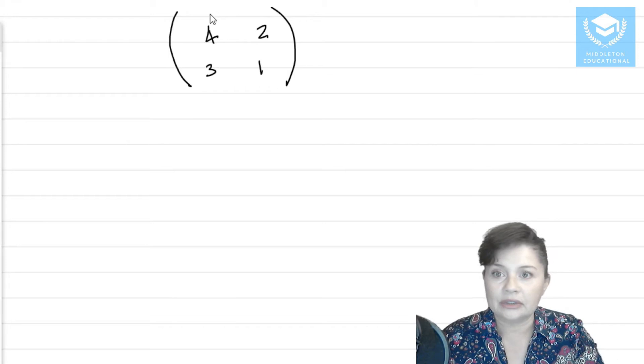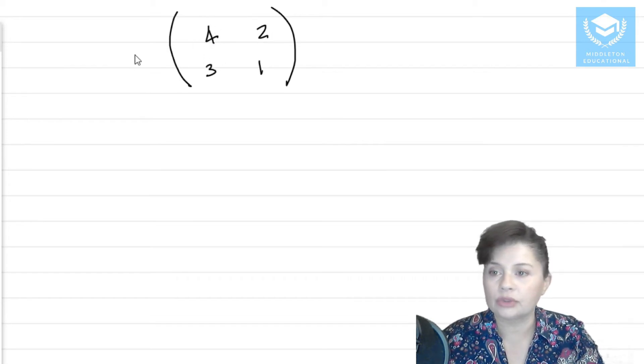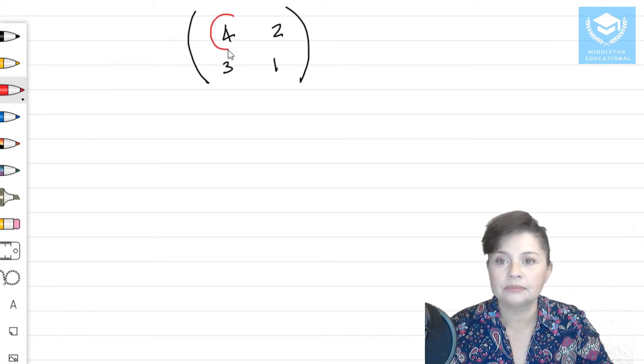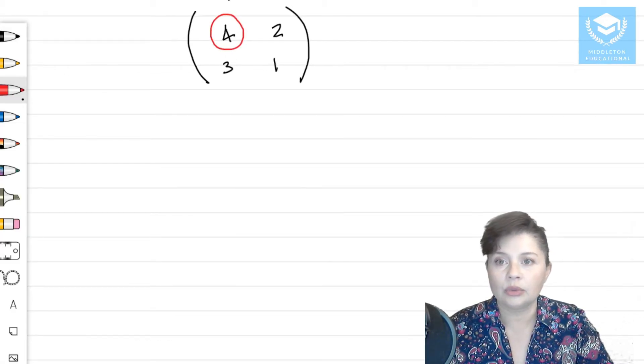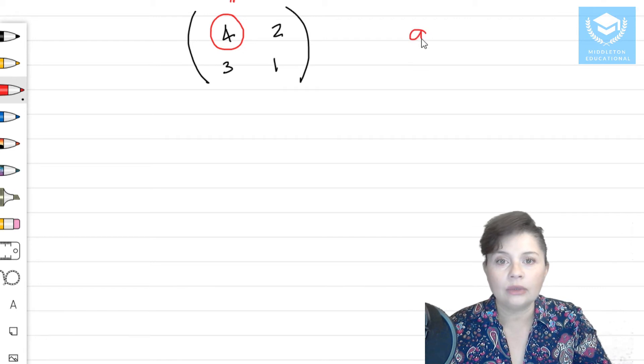Everything inside of this matrix, so the 4, 2, 3, and 1, they are what is called elements, okay? And each of them has a number almost. So this one here is what we would call a 1, 1, right? And a 1, 1,